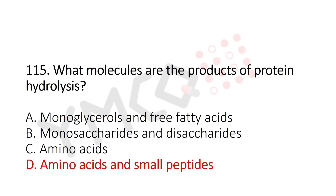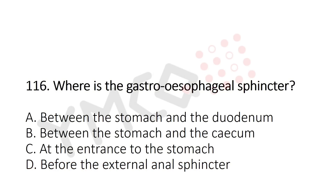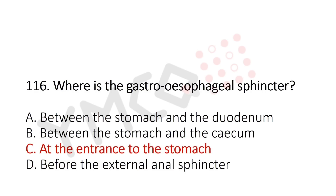Now Question 116: Where is the gastro-esophageal sphincter? Option A: between the stomach and the duodenum, Option B: between the stomach and the cecum, Option C: at the entrance of the stomach, Option D: before the external anal sphincter. The answer is Option C: at the entrance of the stomach.